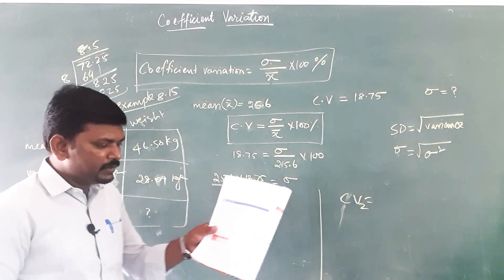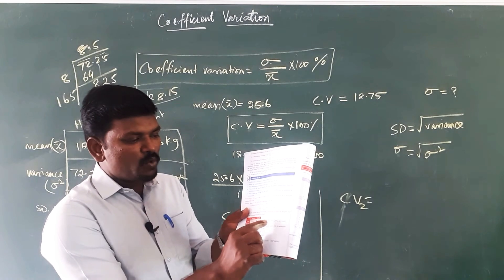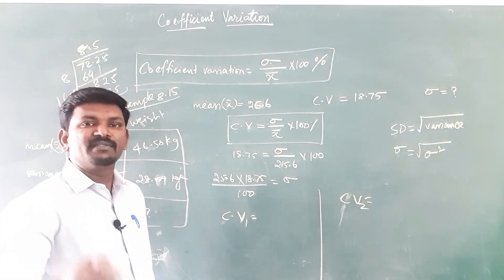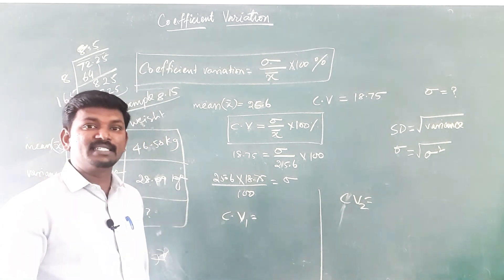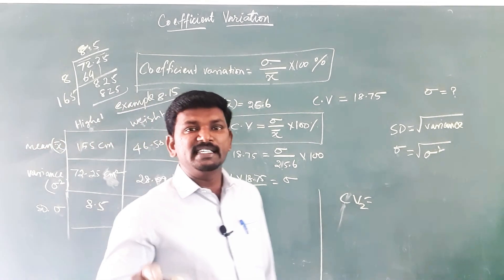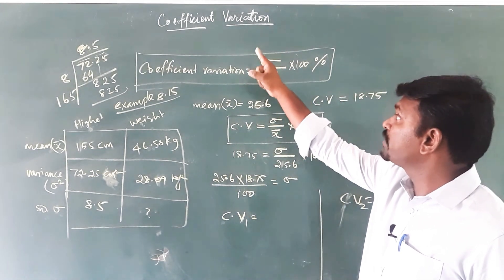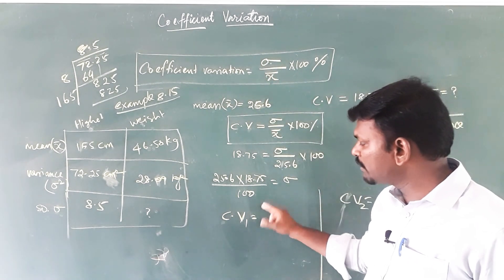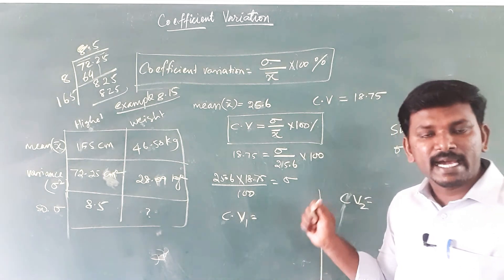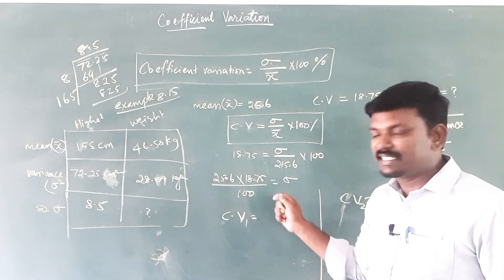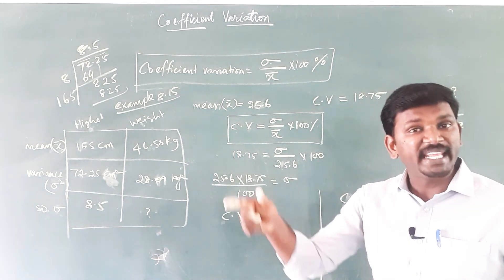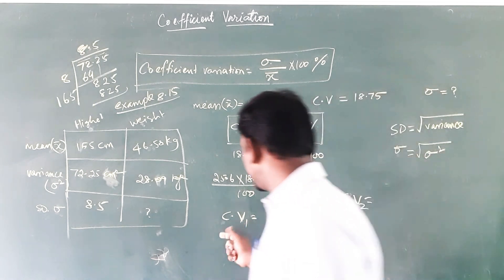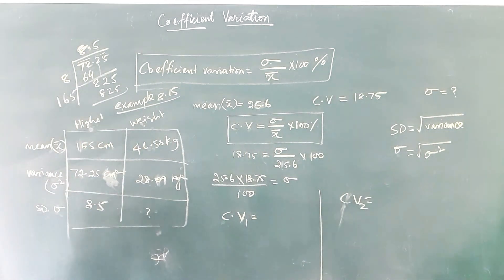The question in your textbook asks: which data is most varying compared to the other — which is not consistent? As already explained, the data which has a lesser value of coefficient of variation is the most consistent. Here the question asks for the most varying data, so the data which has a greater value of coefficient of variation is the most varying data.